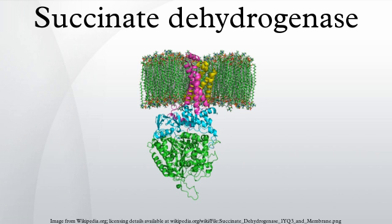The succinate binding site and ubiquinone binding site are connected by a chain of redox centers including FAD and the iron-sulfur clusters. This chain extends over 40Å through the enzyme monomer. All edge-to-edge distances between the centers are less than the suggested 14Å limit for physiological electron transfer, as demonstrated in image 8.